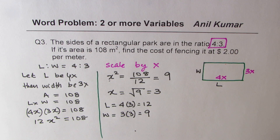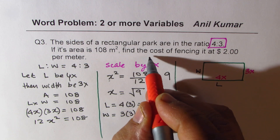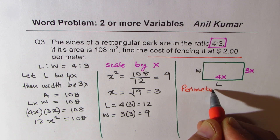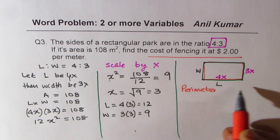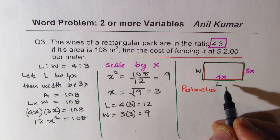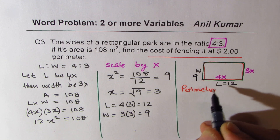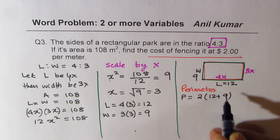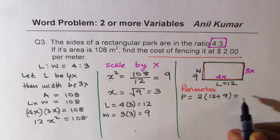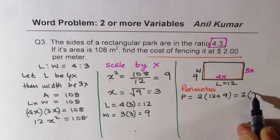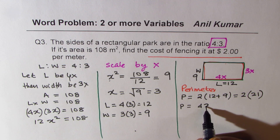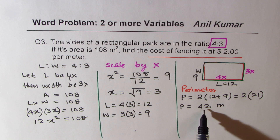So that is what we get. We have found the dimensions — that is the first part. Length equals 4 times 3, which is 12. Width equals 3 times 3, which is 9. Now we need to find the cost of fencing, which means we need to find the perimeter — all four sides. Perimeter equals 2 times length plus width, which is 2 times 12 plus 9, equals 2 times 21, which is 42 meters.